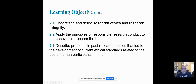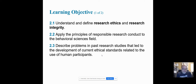The learning objectives are to understand and define research ethics and research integrity. We want to apply these principles in responsible research to conduct behavioral science in the behavioral science field. We also want to describe problems in the past. We're going to go over some history so you can actually see where these research tenets come from. When you have to go in front of an institutional review board, you'll use some of those words like beneficence and other words that you're going to learn here.